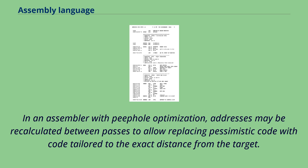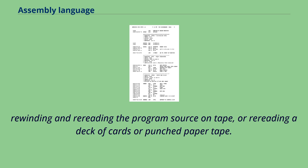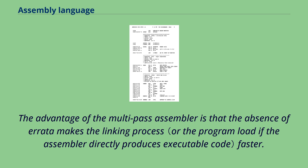And if necessary, pad it with one or more no-operation instructions in a later pass or the errata. In an assembler with peephole optimization, addresses may be recalculated between passes to allow replacing pessimistic code with code tailored to the exact distance from the target. The original reason for the use of one-pass assemblers was memory size and speed of assembly. Often a second pass would require storing the symbol table in memory, rewinding and re-reading the program source on tape or re-reading a deck of cards or punched paper tape.